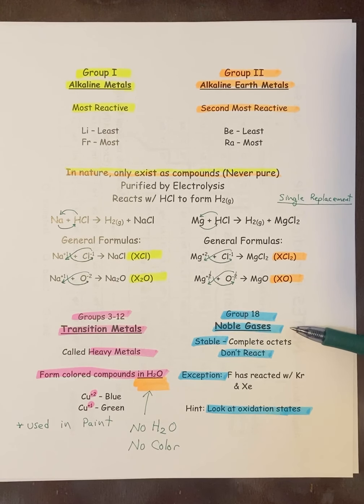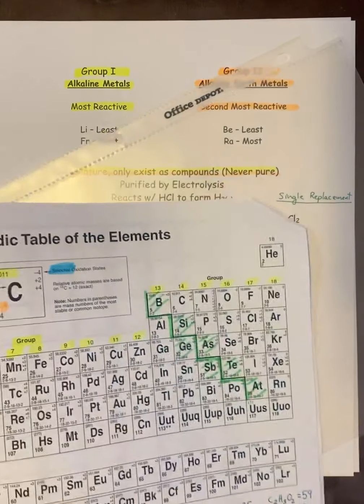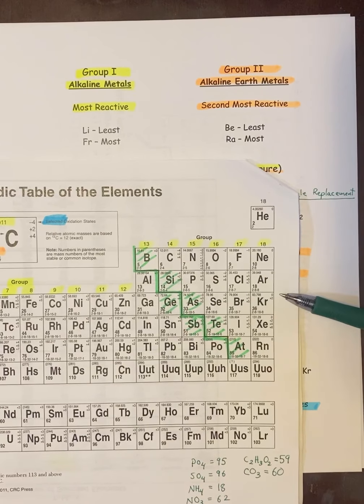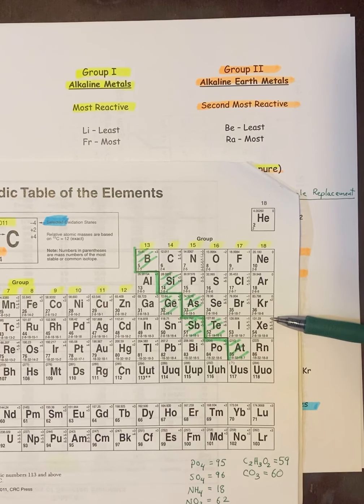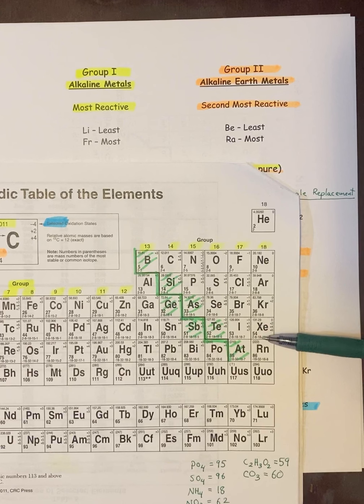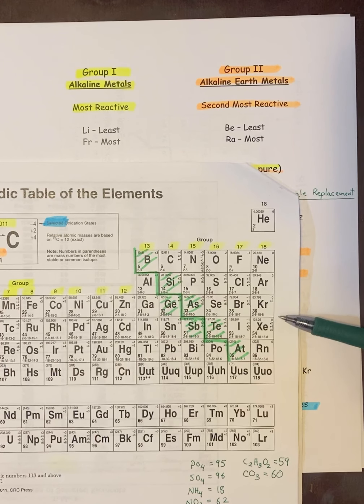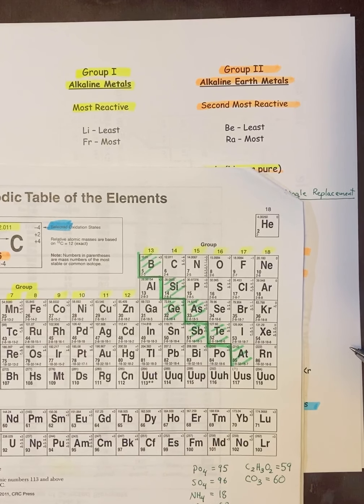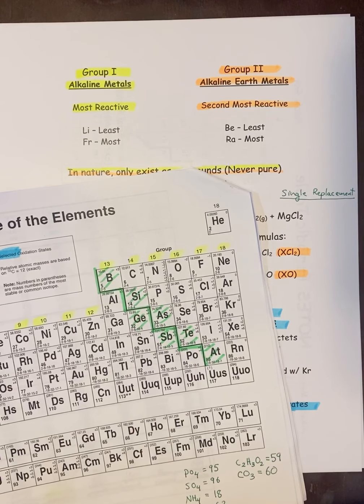Noble gases, we already know these guys, but we'll go over it one more time. They are all stable because they have complete octets, therefore they don't react. The exception is that Kr and Xe have been forced to react with F under very special circumstances. So when you look at the periodic table for these, you're going to notice they normally all have an oxidation state of zero because they don't react, except Kr and Xe. They actually have oxidation states because they've been forced to react under very special circumstances.